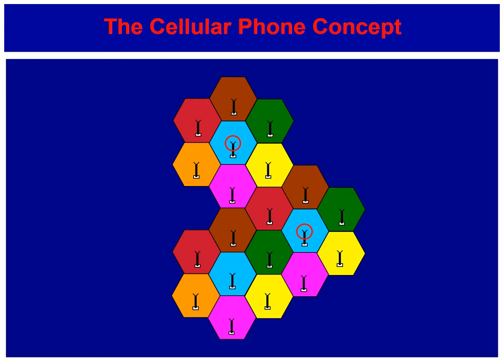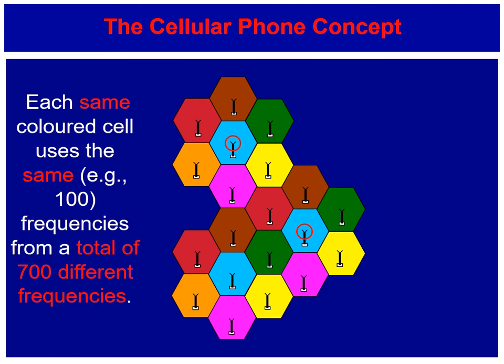The cellular phone concept first originated as an idea in the 1940s, but it wasn't until the technology was available in the 1970s that it became commercially realisable. The idea was very simple: you broke the country up geographically into cells — those different coloured hexagons. Each cell uses, say, 100 frequencies, and as there are seven different coloured cells, you only need 700 frequencies in the whole of the UK.